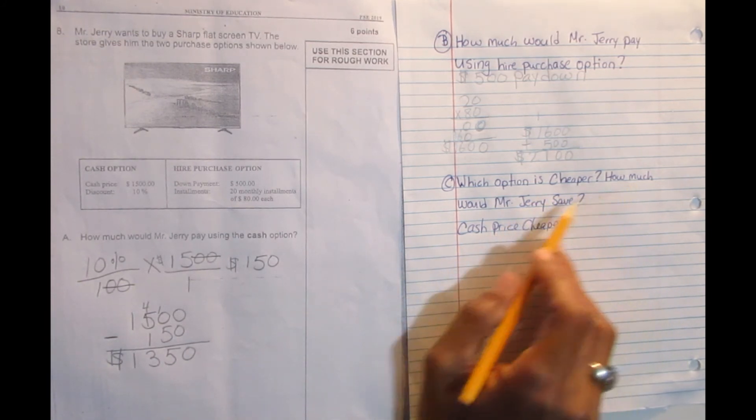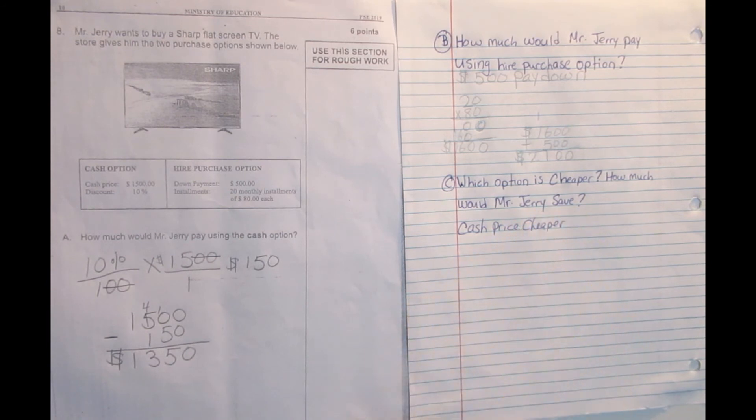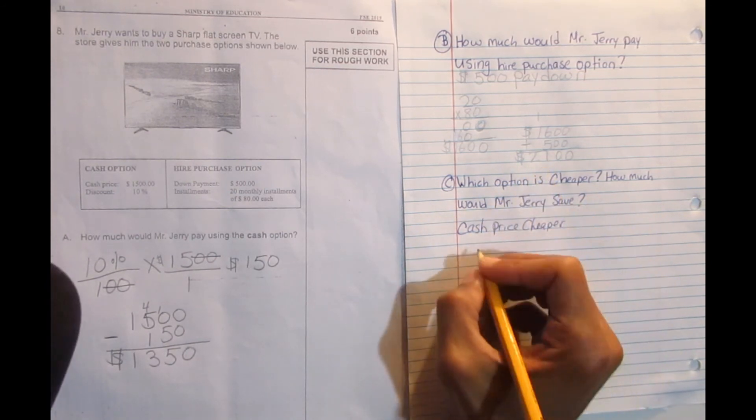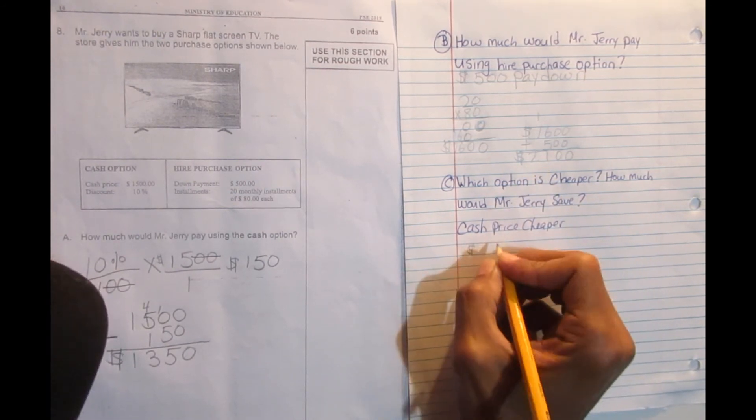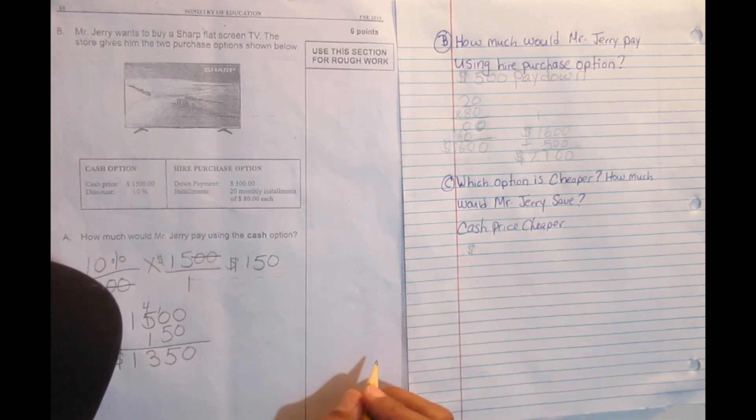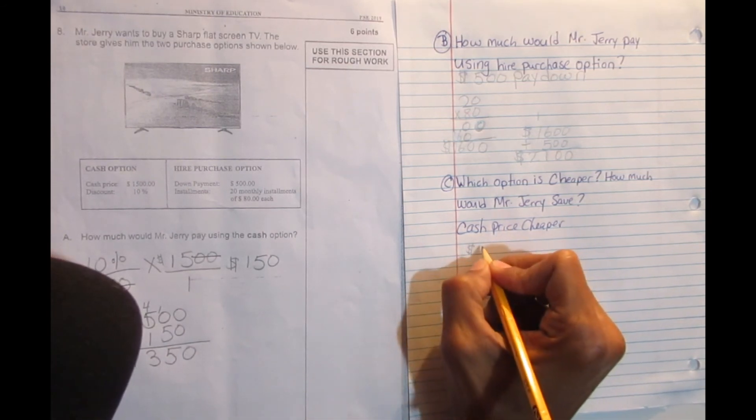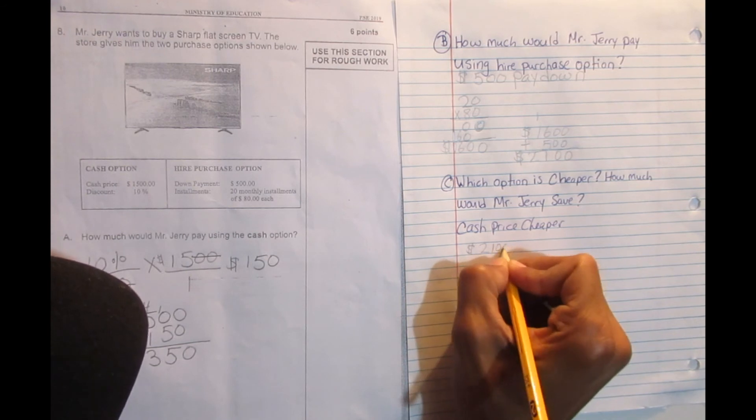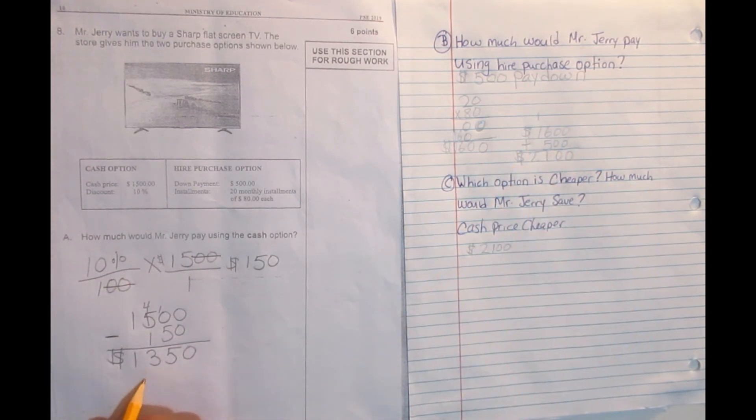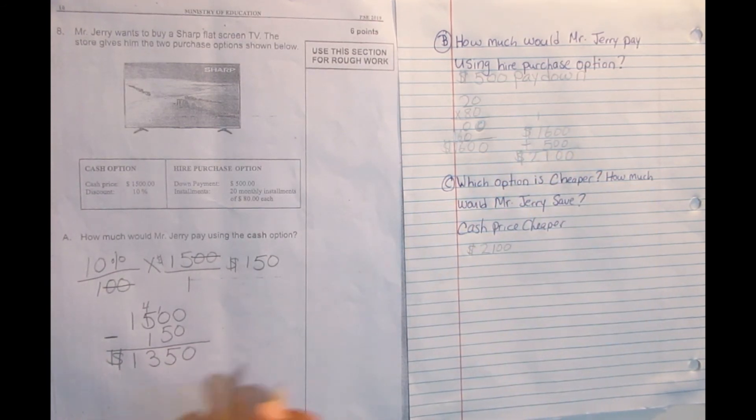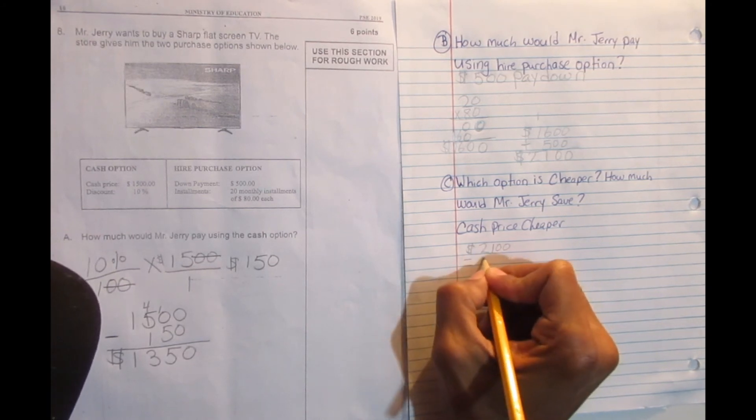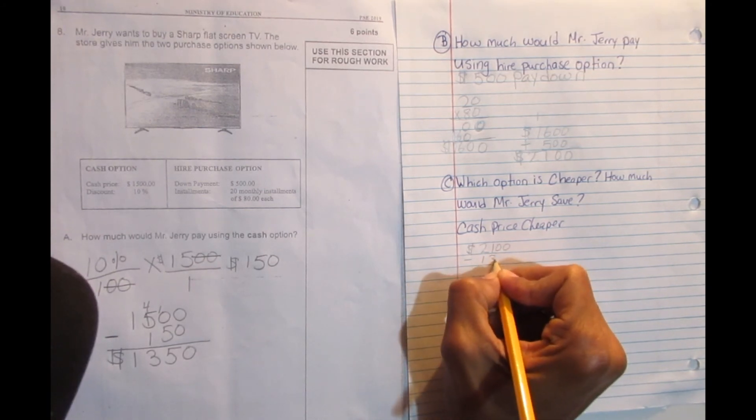And then the next part of the question says, how much would Mr. Jerry save? So it's the higher purchase price, which is the bigger amount. The hire purchase, by getting the item on hire purchase, I would pay $2,100. Remember? Then the cash price, I would pay $1,350. So I'm going to minus to see how much I save, $1,350.